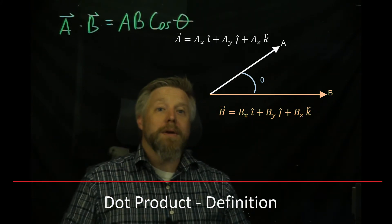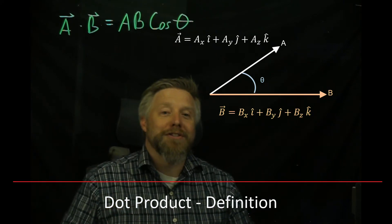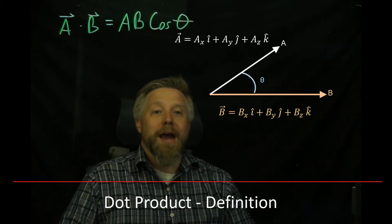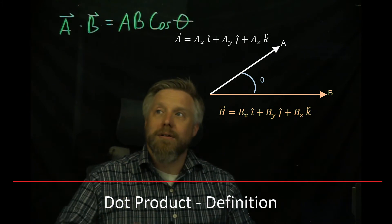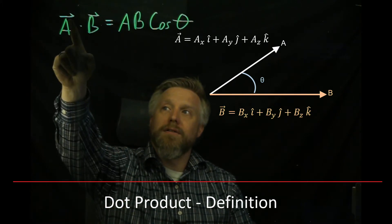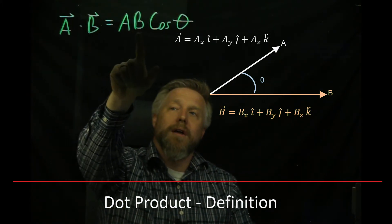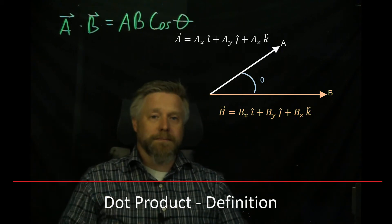What do I mean by a scalar? A scalar is just a number — it gives you a magnitude, not a magnitude and direction. These vectors have harpoons over them because they have magnitude and direction, but on the right-hand side of the dot product equation, we just have a number.